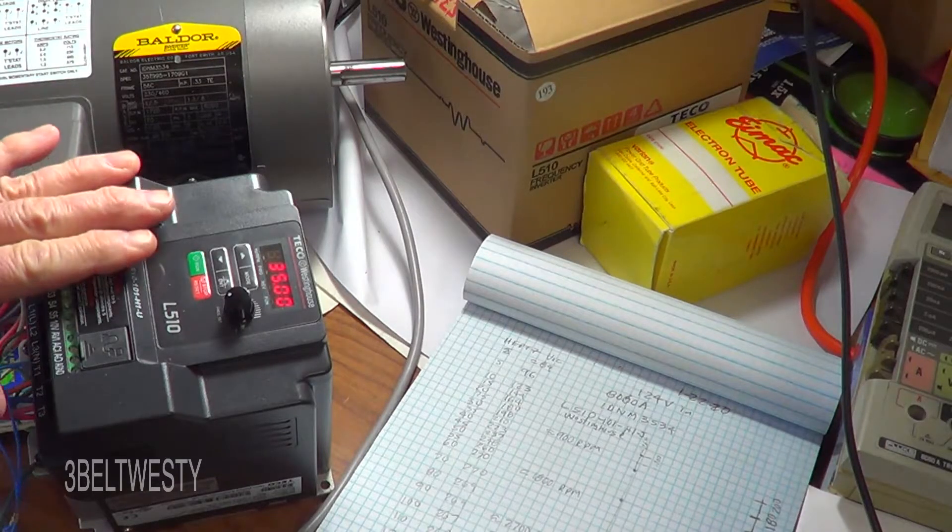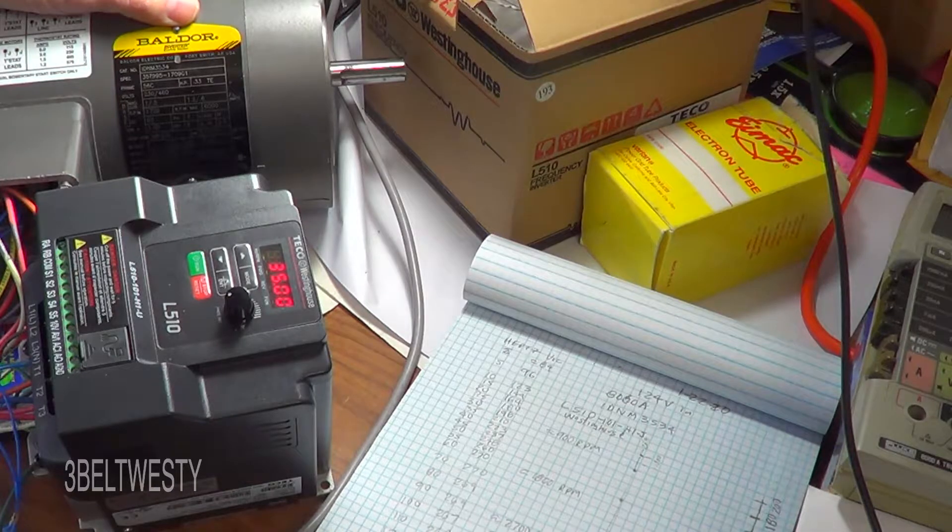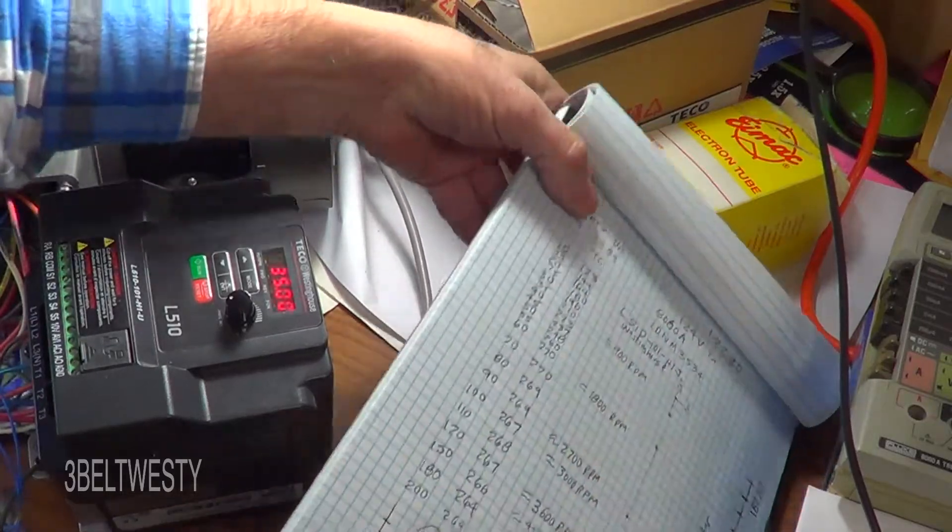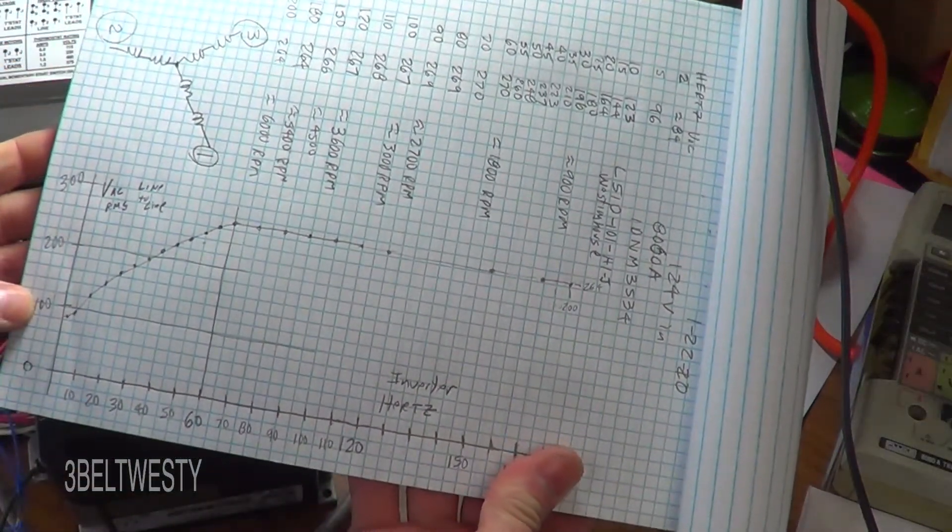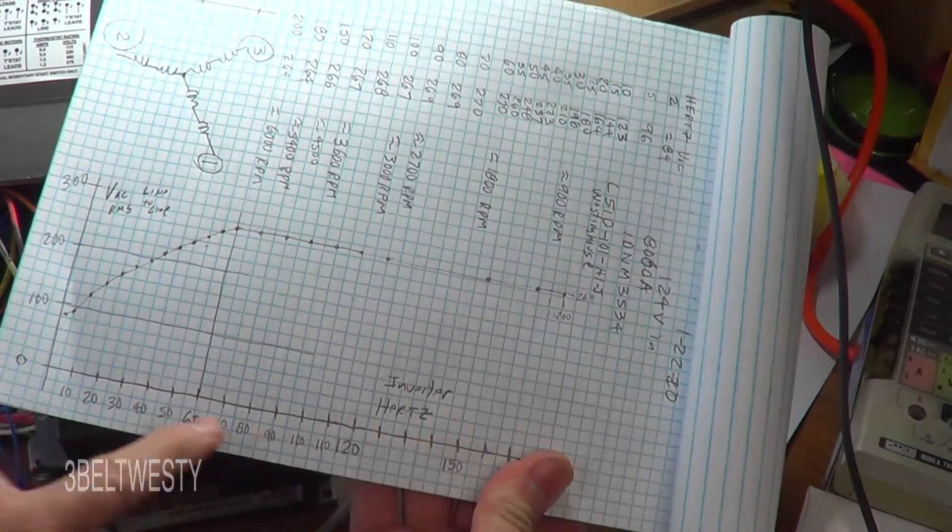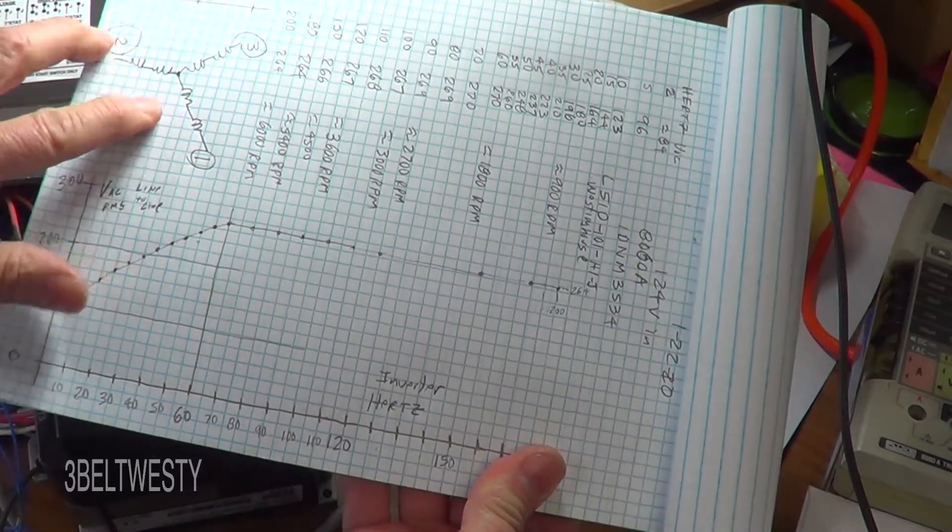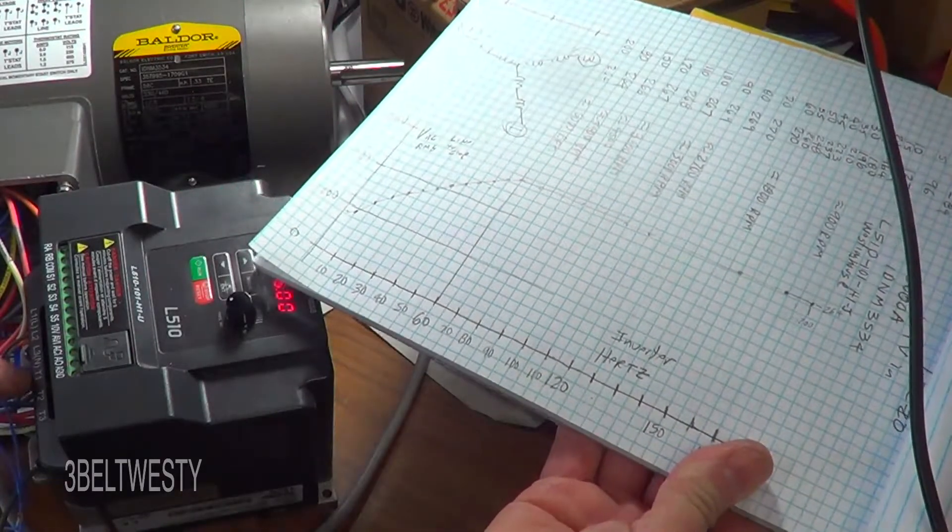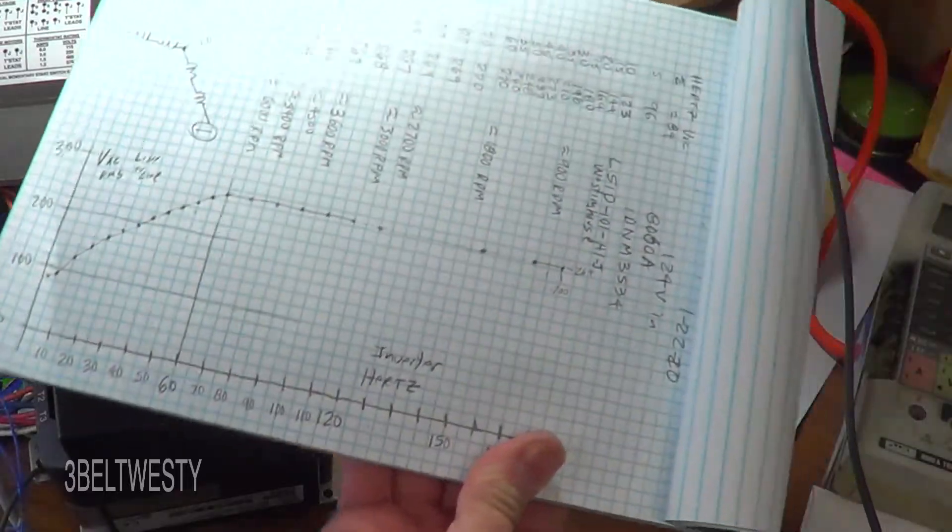Okay, I've got the inverter here and the Baldor inverter motor, and I want to show what the output voltage is versus the frequency on this. I went through and measured, varied the Hertz on the inverter, and measured the RMS voltage line to line. I went from T1 to T2 and measured over here with the true RMS meter, the 8060A.